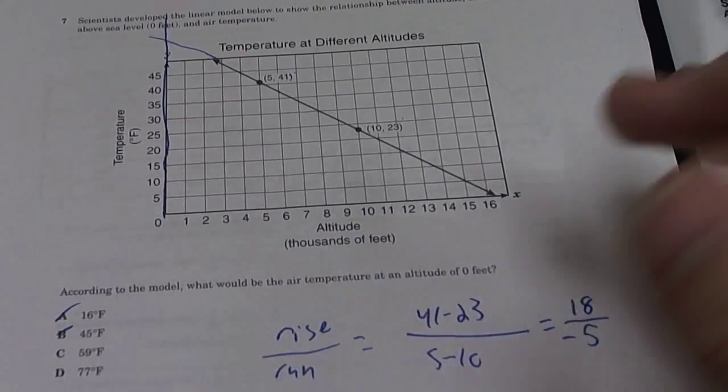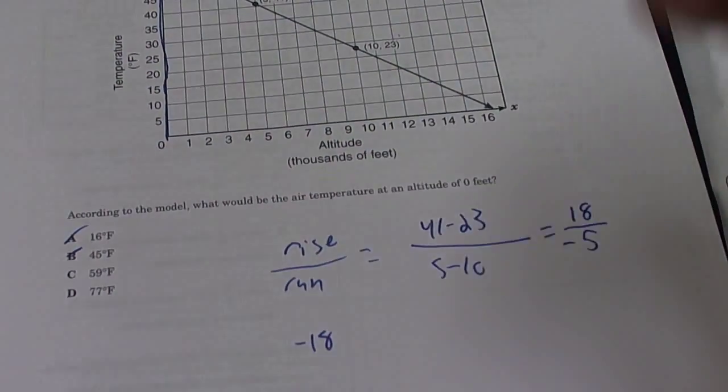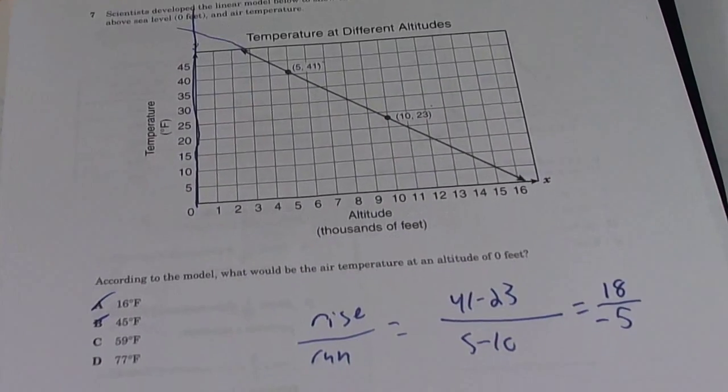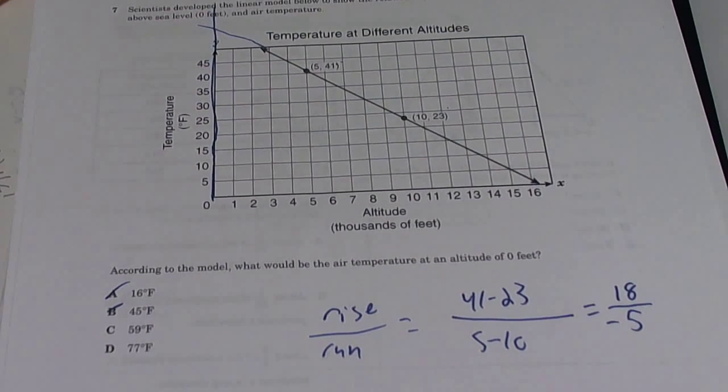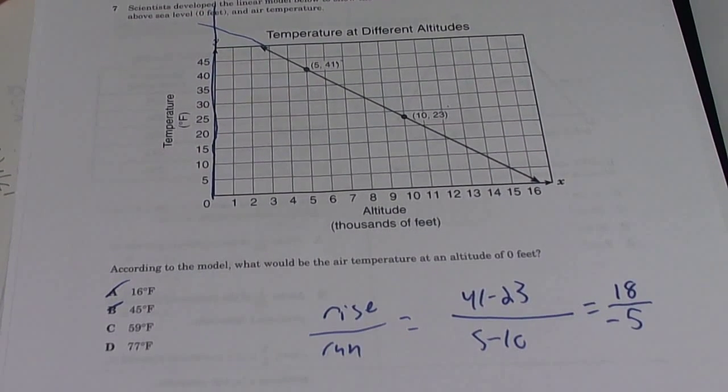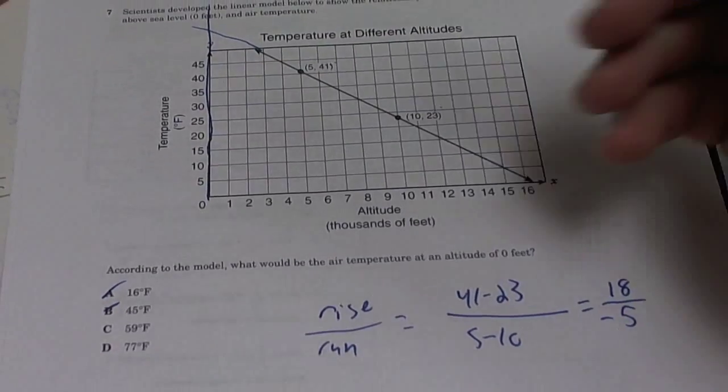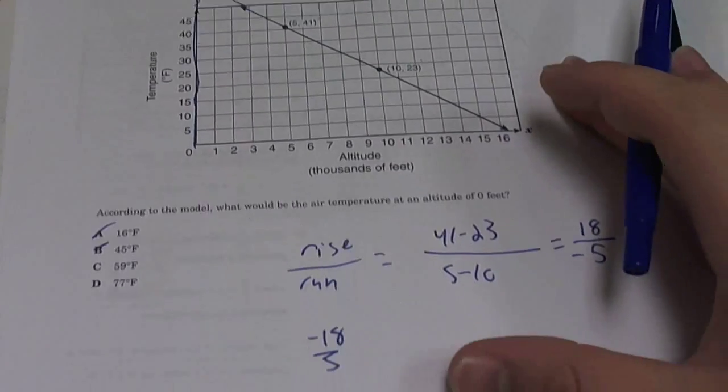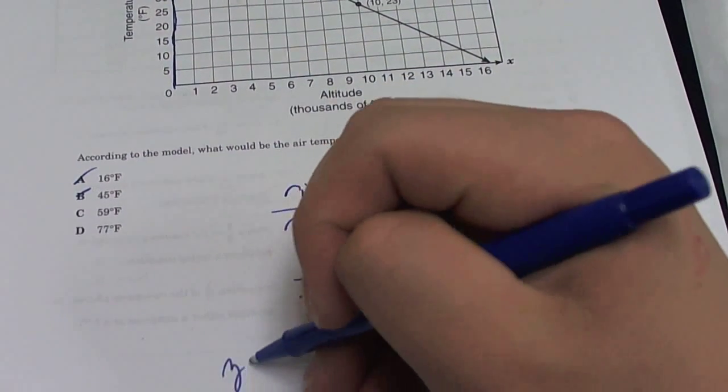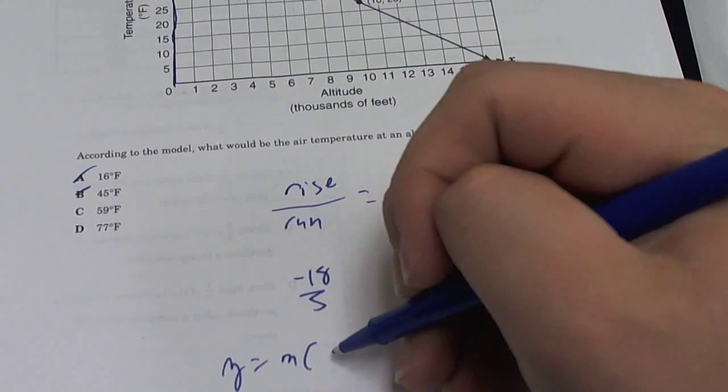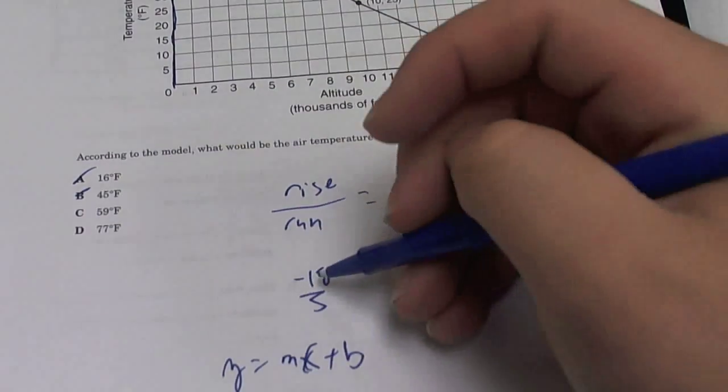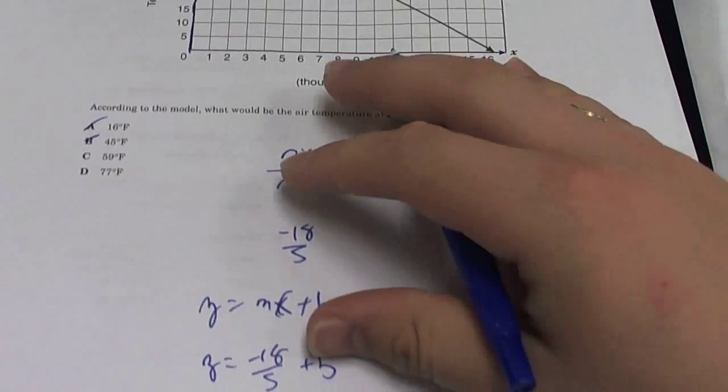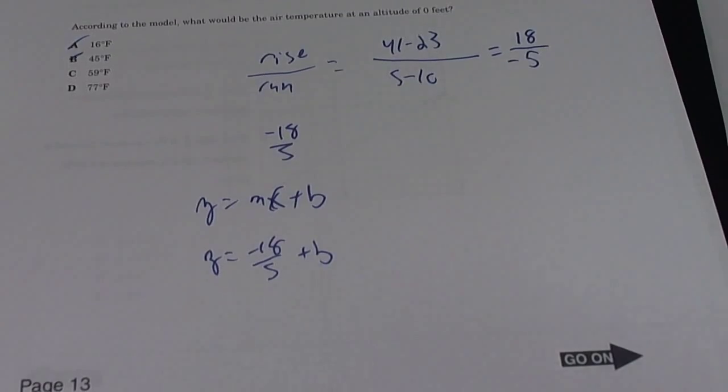Okay, so that is our slope, negative 18 over 5. So now we have to solve for our b, which will be our y-intercept, which is the thing that we're looking for. So we have to plug in one of these points to find out what our intercept is. So we do y equals mx plus b.